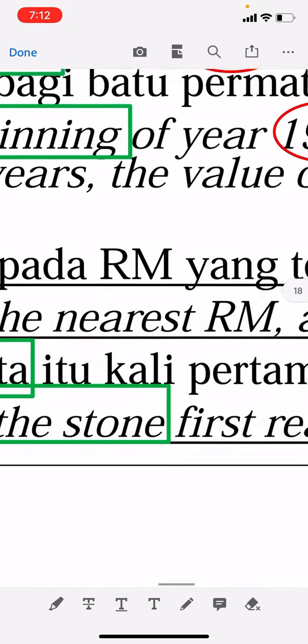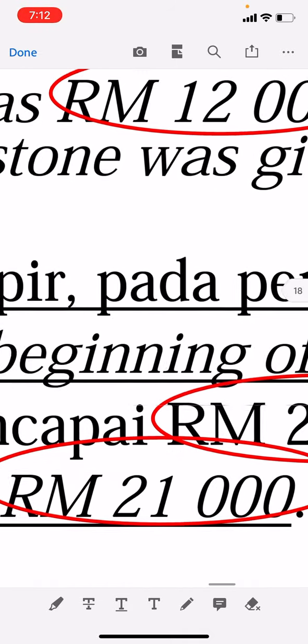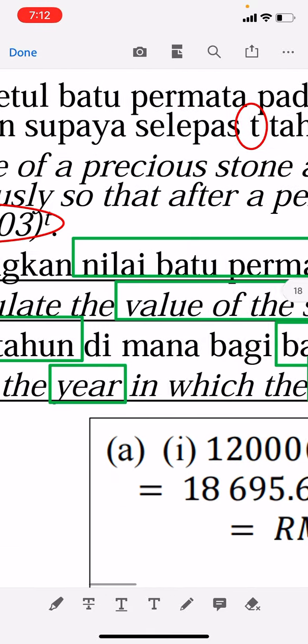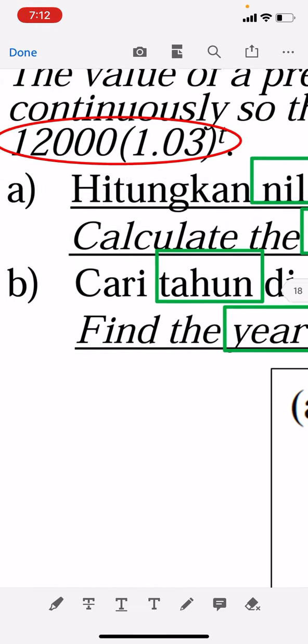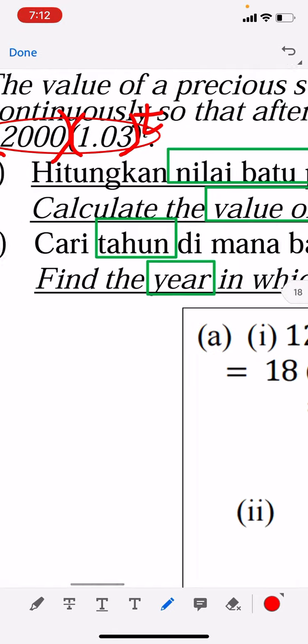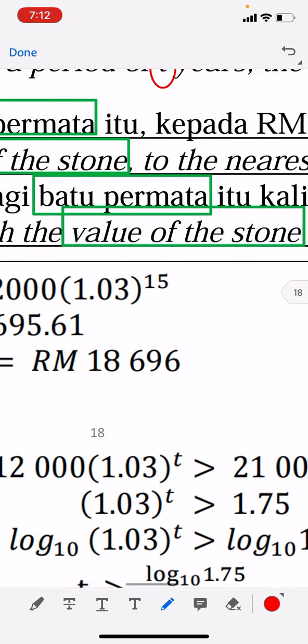t years, the value of the stone was given by this expression or function. Sometimes it will be number of bacteria, sometimes money. 12,000 is a number multiplied by 1.03 to the power of t. They ask you to calculate the value of the stone...